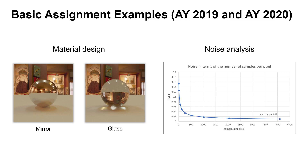Now I will show you the assignment examples from the 2019 and 2020 academic years. In both years, two kinds of assignments — material design and noise analysis — were given to the students. The students were assigned to implement the metal surface material and the glass surface material based on the formulae governing reflection on metal surfaces and glass surfaces respectively. These formulations were taught in the lecture prior to the assignment.